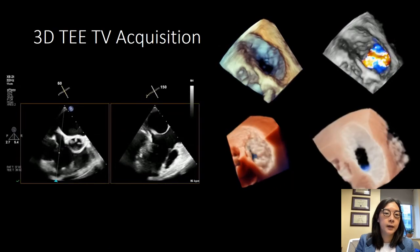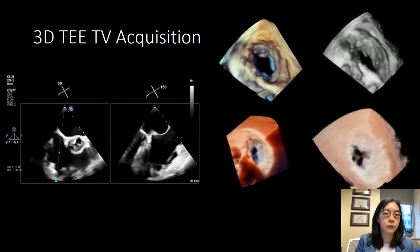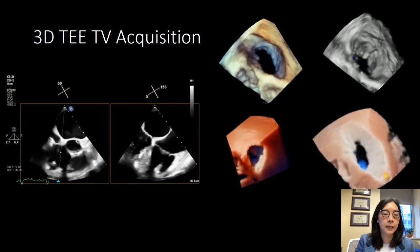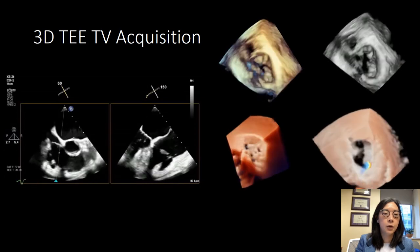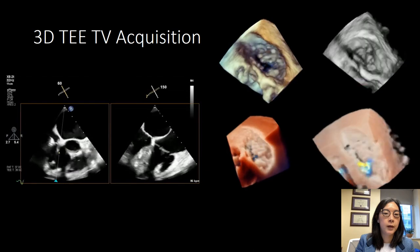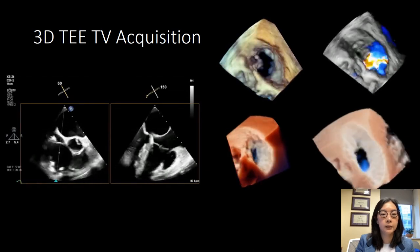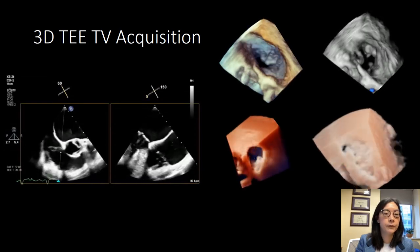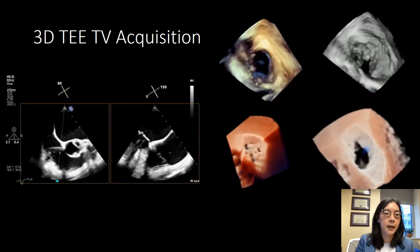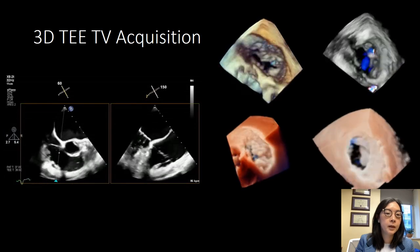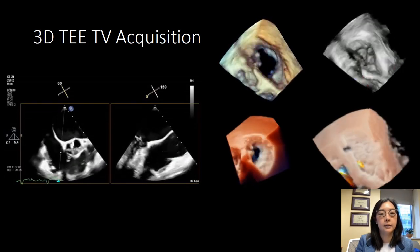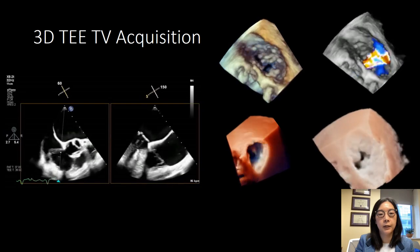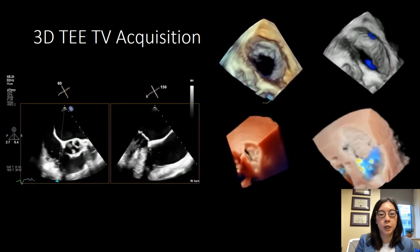In terms of tricuspid valve 3D acquisition, similar to the mitral valve, you want to find an imaging plane where you see the tricuspid valve leaflets very well in both systole and diastole, and you also want to make sure it's as perpendicular as you can get to the beam. When you acquire your tricuspid valve, most of the time because it is slightly off-axis, you will have to use some cropping to display the valve nicely. Here we have a patient with myxomatous tricuspid valve disease acquired in this mid-esophageal inflow-outflow view, then cropped to align it so we're looking en face at the tricuspid valve leaflets, showing both the prolapse and the regurgitant jet coming through.